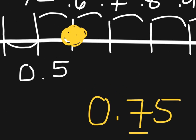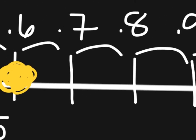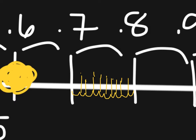If you wanted to, you could cut up the spaces between seven tenths and eight tenths into ten equal spaces: one, two, three, four, five, six, seven, eight, nine, ten. That would be seventy-one hundredths, seventy-two hundredths, seventy-three hundredths, seventy-four hundredths, seventy-five hundredths, seventy-six, seventy-seven, seventy-eight, seventy-nine — you get the point. So seventy-five hundredths falls right about here.